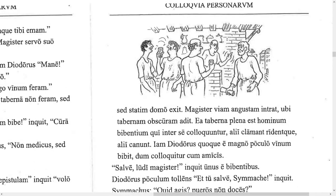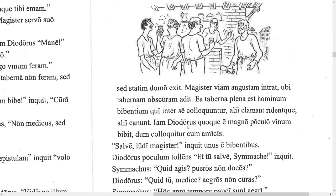We can see a picture of Diodorus going out to the shop — and the figure already drinking appears to be Simacus the doctor. Immediately Diodorus leaves the house and enters a narrow road, where he goes to a dark tavern. That tavern is full of drinking people who are conversing with each other. Latin doesn't have a reciprocal pronoun like 'each other,' so you have to say 'talking between themselves' — 'inter se coloquuntur.'